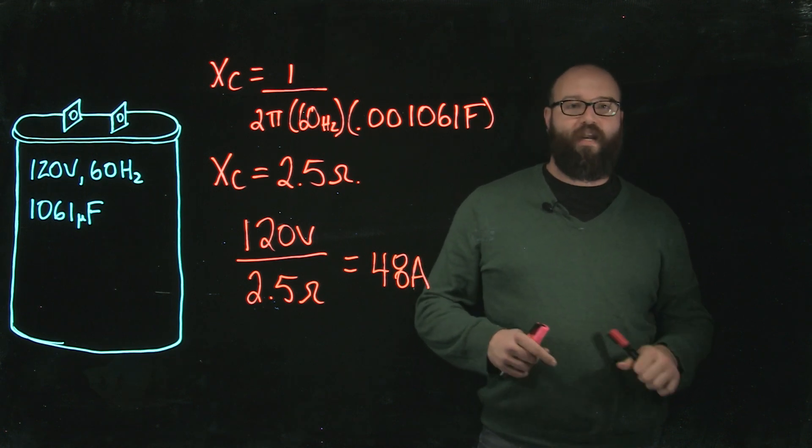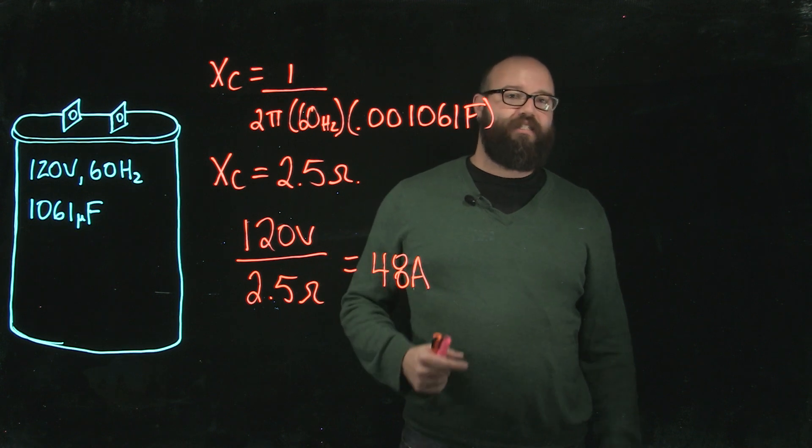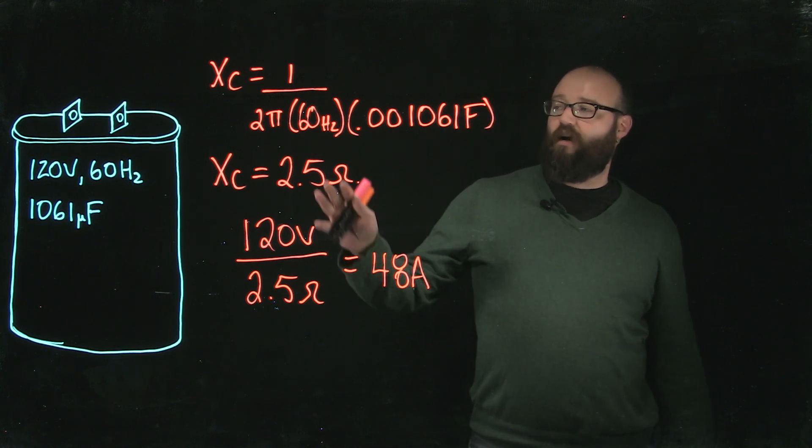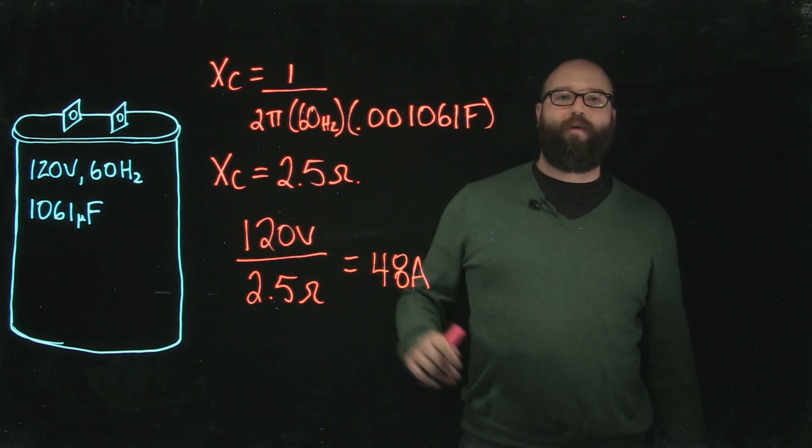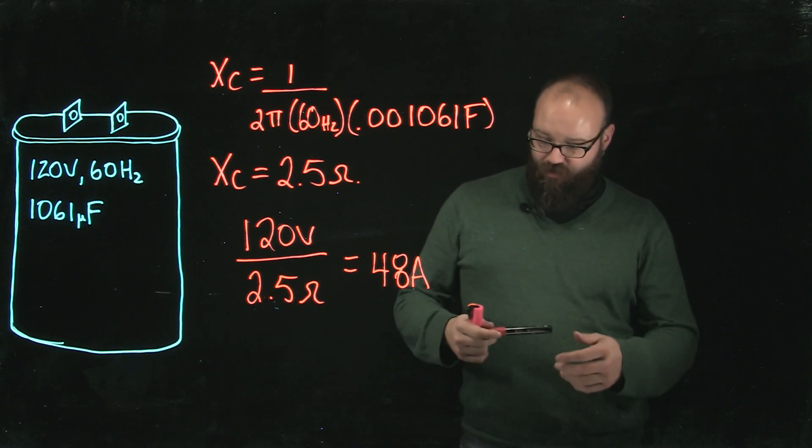Once we've got this 48 amps the code tells us that we cannot be less than 135% of the rating of the current of the capacitor. That means whenever we do our calculation it cannot be less than that number.